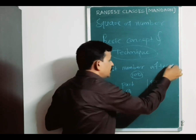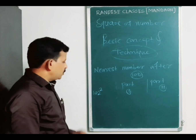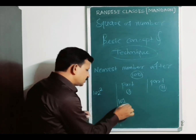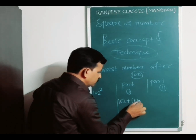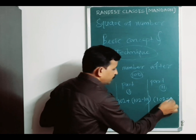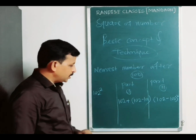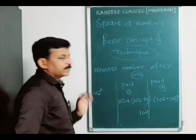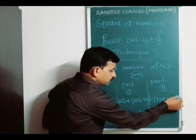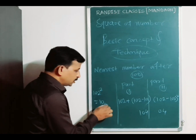Now, a technique for numbers nearest after 100, just like 102 square. 102 is the nearest number after 100. Part 1: same number plus (102 minus 100). Part 2: (102 minus 100) squared. So 102 minus 100 is 2, and 102 plus 2 equals 104. Then 2 square equals 4, written as 04. Therefore the square of 102 is 10404.